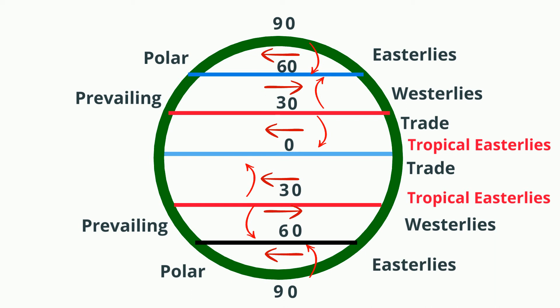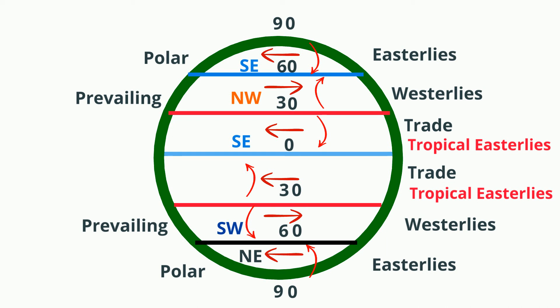So starting at the very top, that means the winds are going to blow to the southeast, and then it's going to go northwest, and then southeast. And starting from the very bottom, in the south, it's going to go northeast, southwest, northeast.